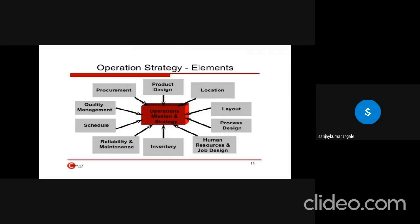Second is operation strategy element. Operation mission and strategies are connected to every point of view. That is product designing, location, layout, process design, human resource and job designing, inventory, reliability and maintenance, schedule, quality management and procurement.